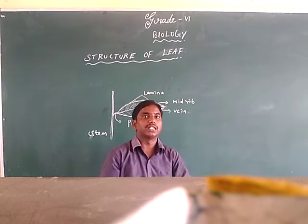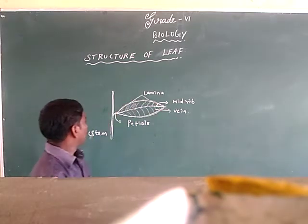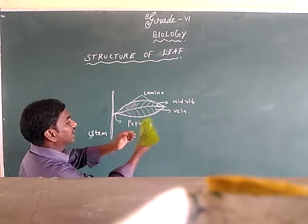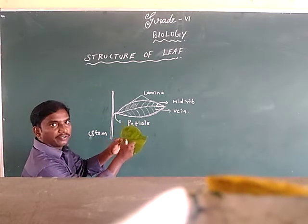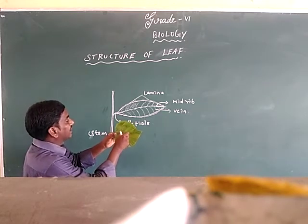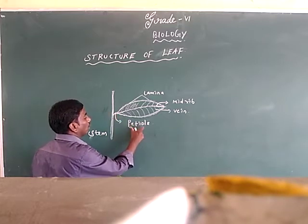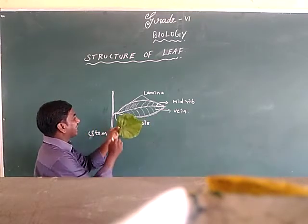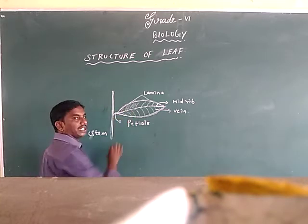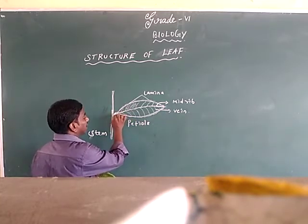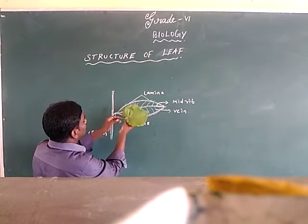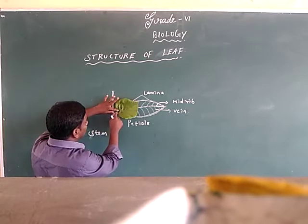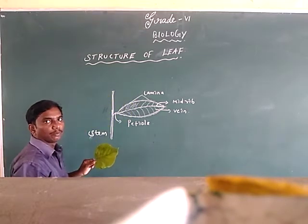First, what is the meaning of 'petiole'? The petiole is a part of your leaf — the part where the leaf is attached to the stem. The part of your leaf which is attached to the stem is called the petiole.